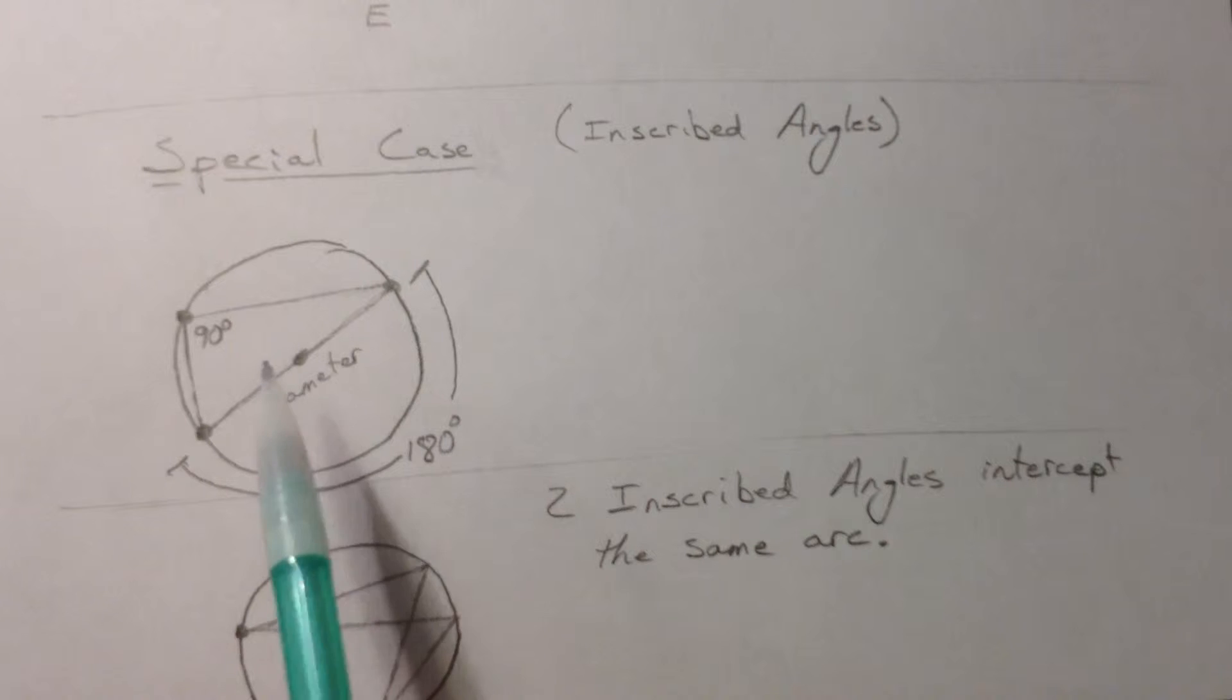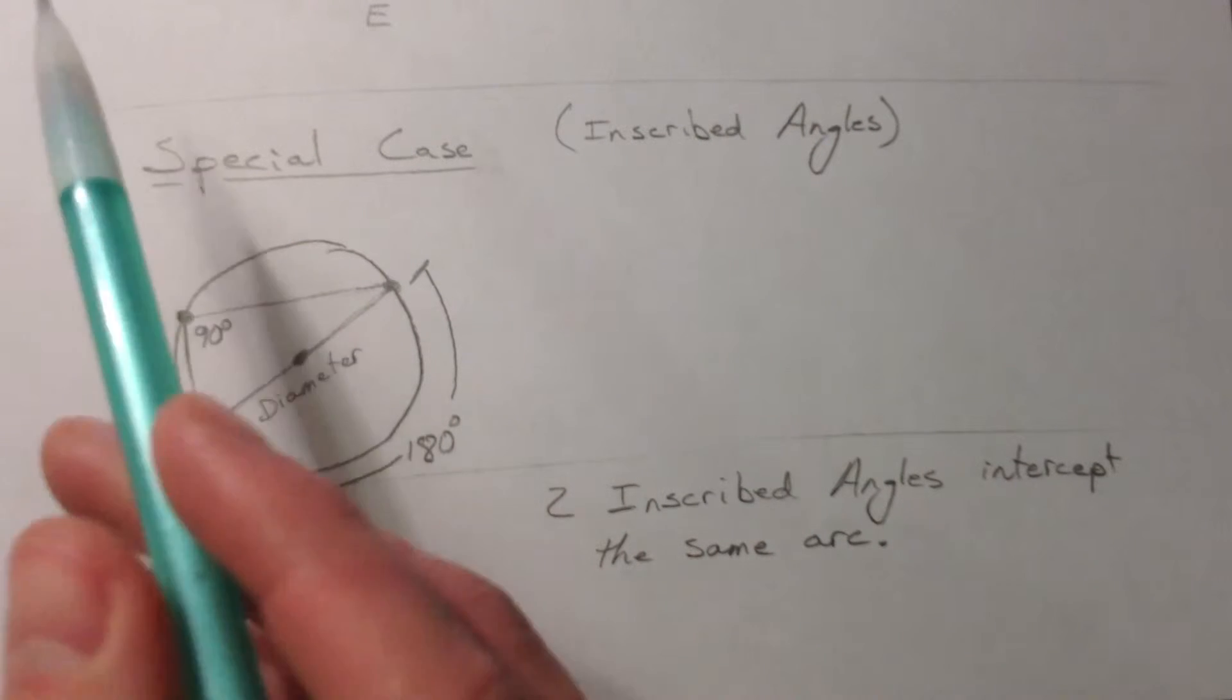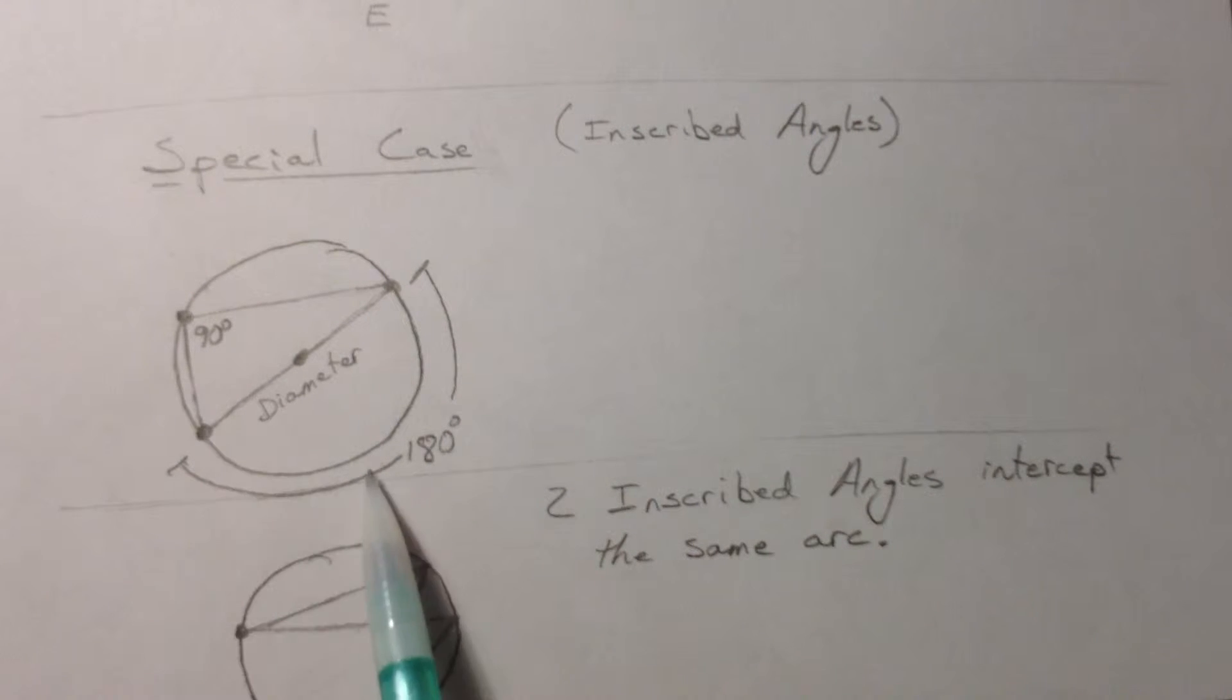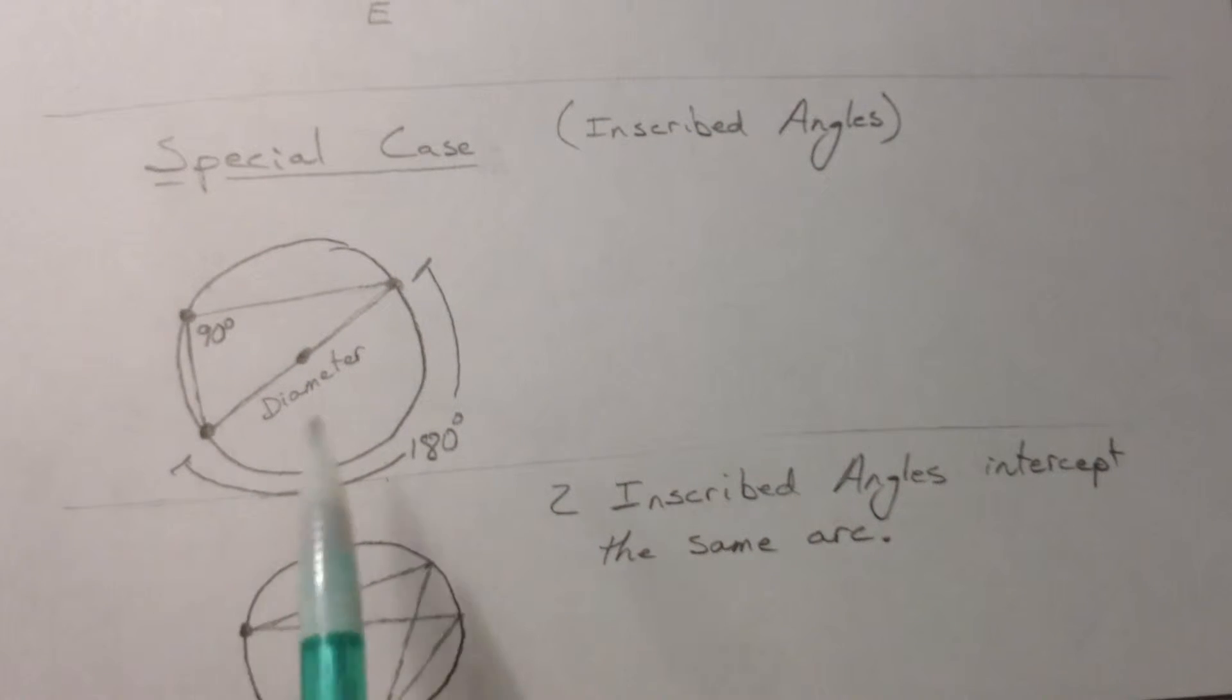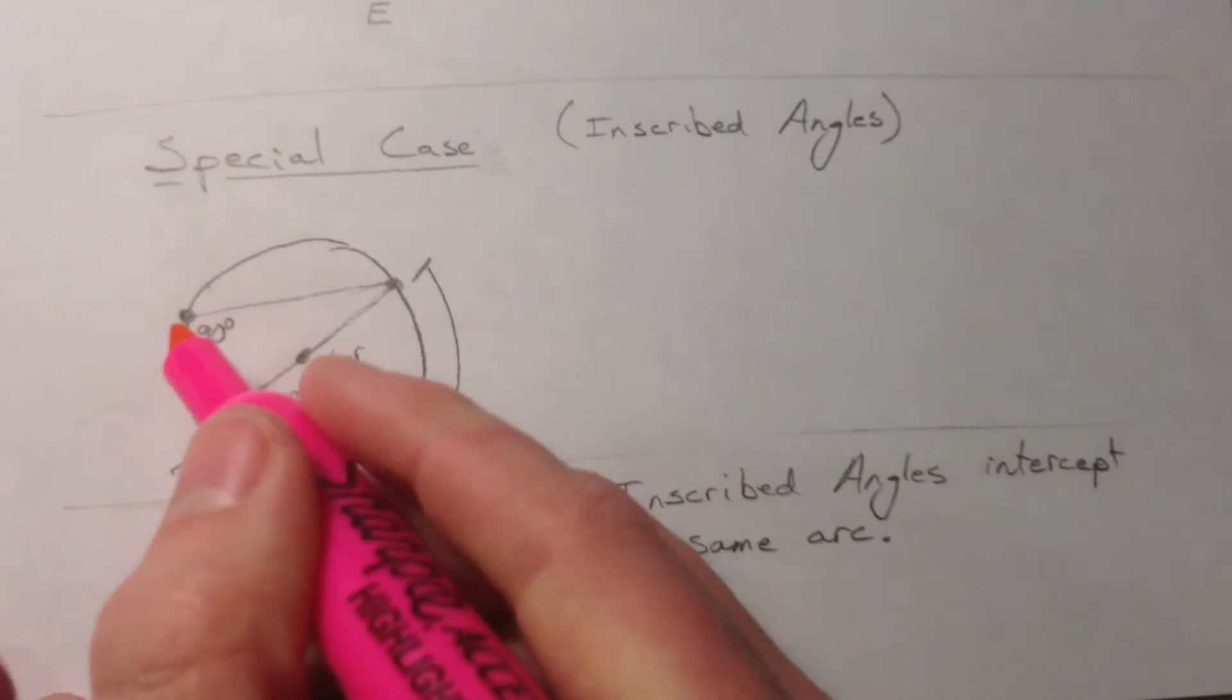Notice that 90 is still half of 180, or 180 is still double the 90. It's kind of hard to see sometimes, but this is our angle that we're talking about and this is our intercepted arc that is double.